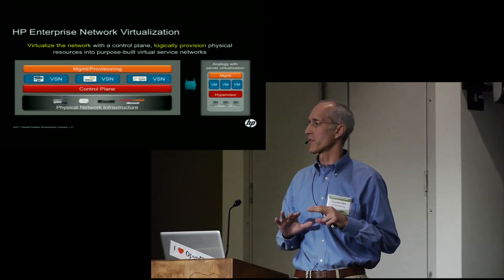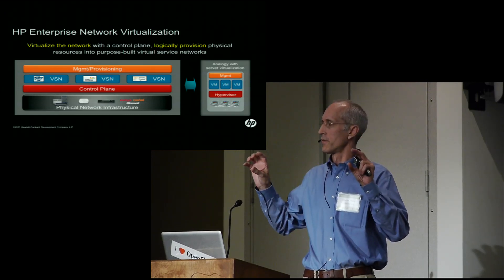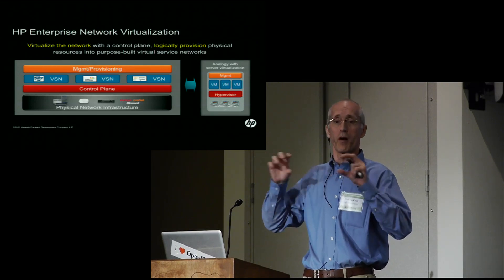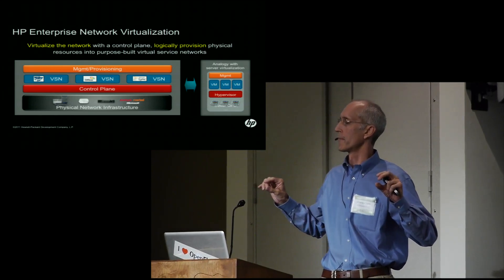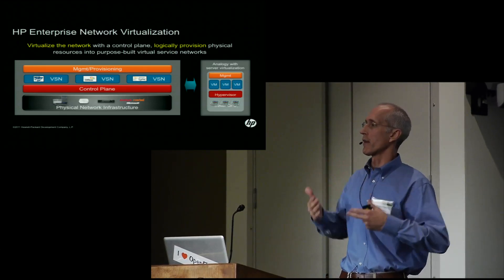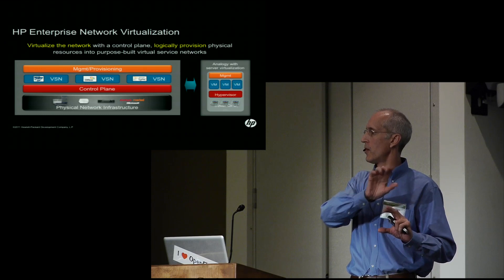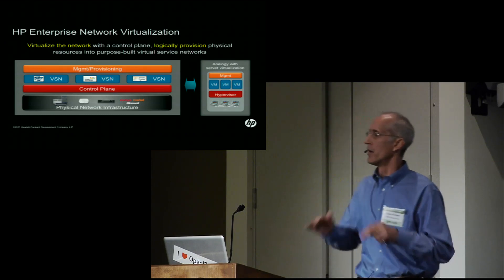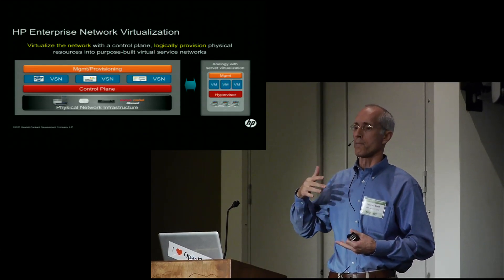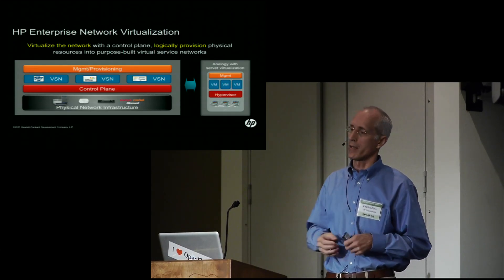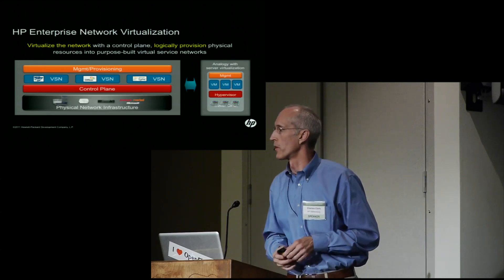What this allows us to do is reduce the complexity of managing a network by allowing us to set policies at a high level to create those virtual service networks, which are essentially policy statements. That is then translated down into device configurations through this virtualization layer. When we decouple the physical from the logical, we get a lot of power — we can change the physical infrastructure without needing to change our policies, or change our policies without changing the physical infrastructure below. This is the application we're looking at for really taking advantage of SDN and OpenFlow technology, with OpenFlow providing the connection between the control plane and the physical infrastructure.